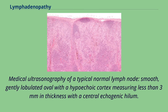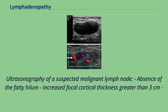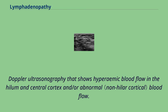Medical ultrasonography of a typical normal lymph node shows a smooth, gently lobulated oval with a hypoechoic cortex measuring less than 3 mm in thickness with a central echogenic hilum. Ultrasonography of a suspected malignant lymph node shows absence of the fatty hilum, increased focal cortical thickness greater than 3 cm, and Doppler ultrasonography showing hyperemic blood flow in the hilum and central cortex or abnormal blood flow.